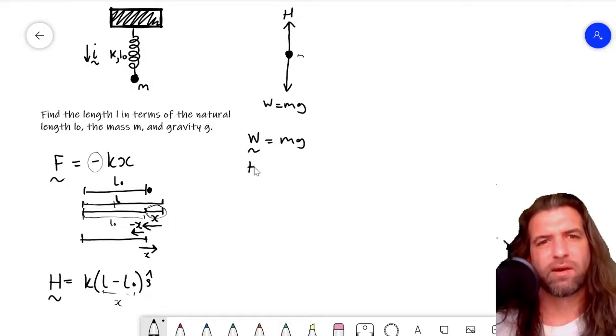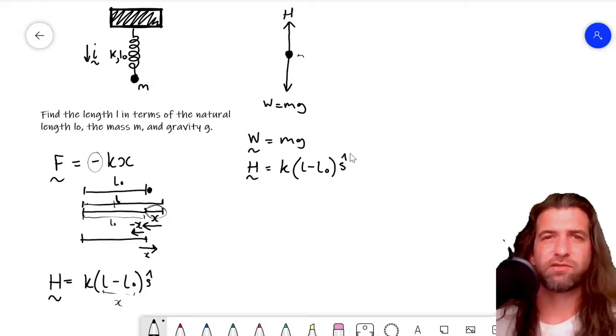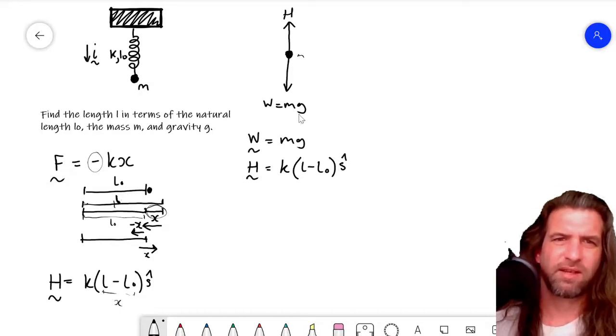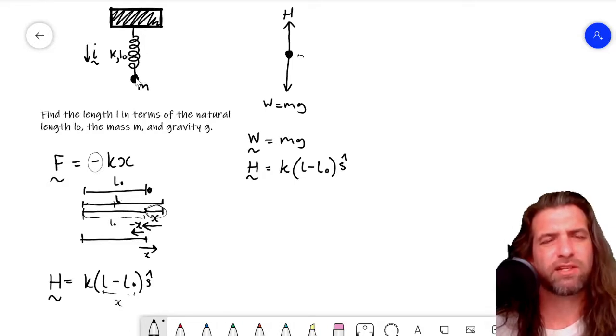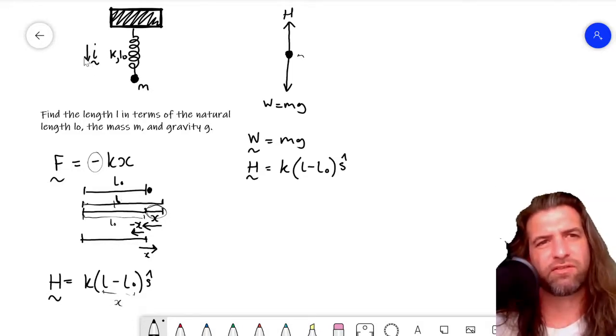So we've got the weight is equal to mg. And we've got H is equal to k(L - L0) times this directional vector. So now we can talk about the directional vector. So the directional vector for a model spring always points from the mass towards the center of the spring. Well, in this case, we're given the direction, the direction i, of this spring.